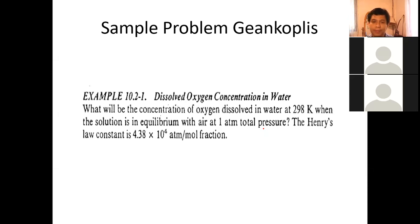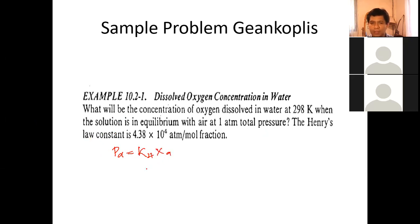We are asked to solve for the concentration of oxygen in water if the water is in equilibrium with air at a total pressure of 1 atmosphere. We're going to use Henry's law: P sub A equals Henry's law constant K sub H times X sub A. What we're looking for is X sub A. Expressed for oxygen: P O2 equals K H times X O2.